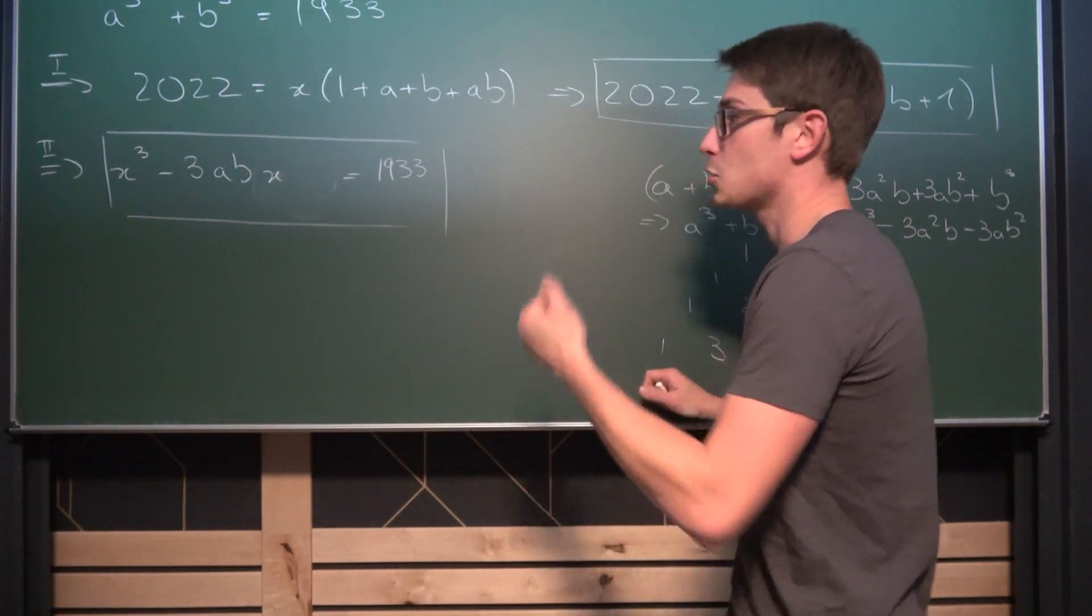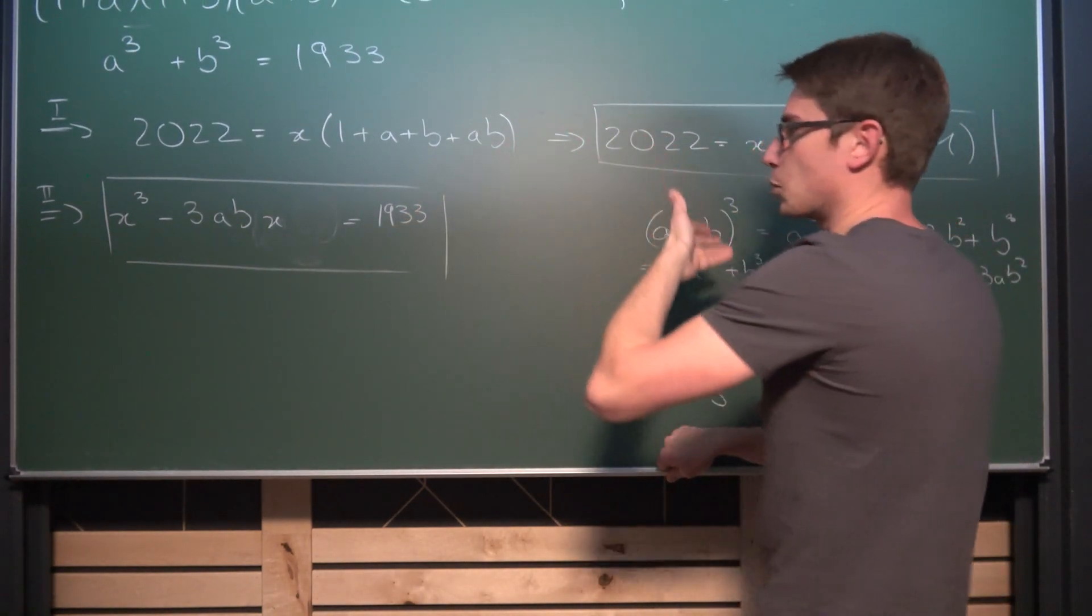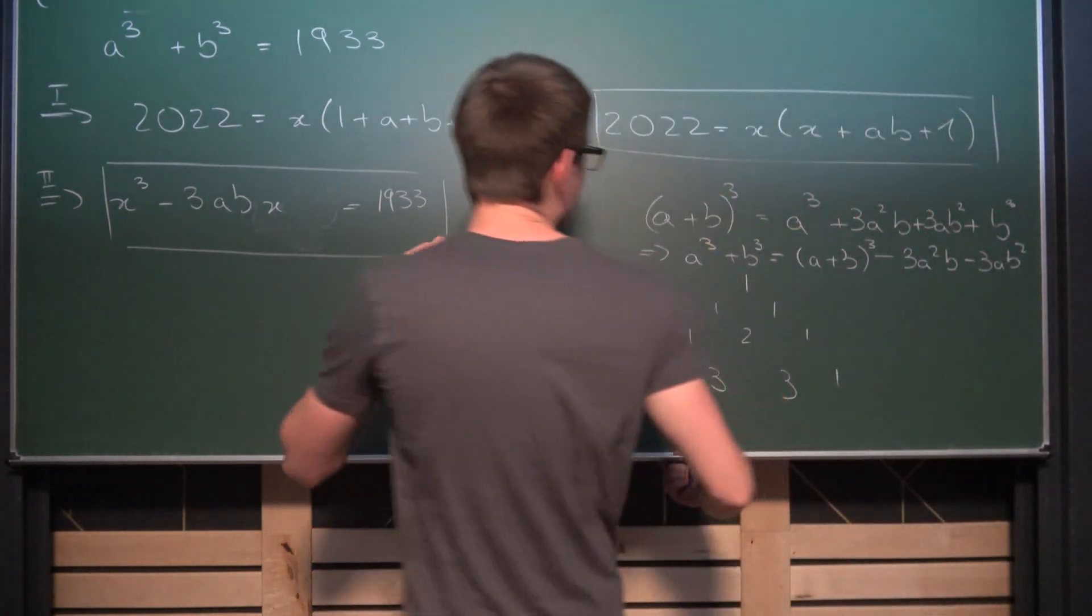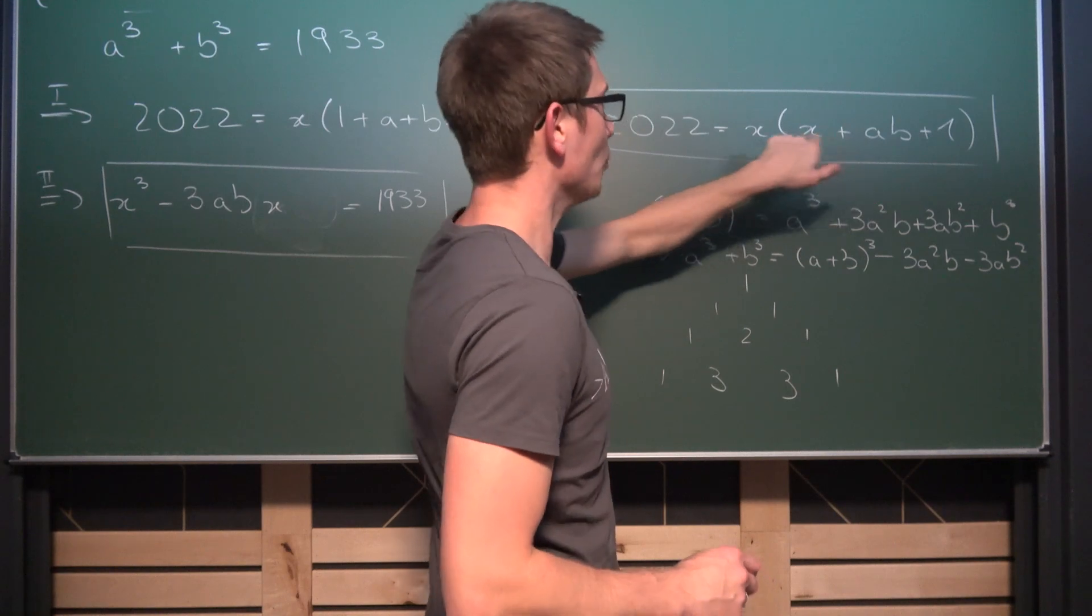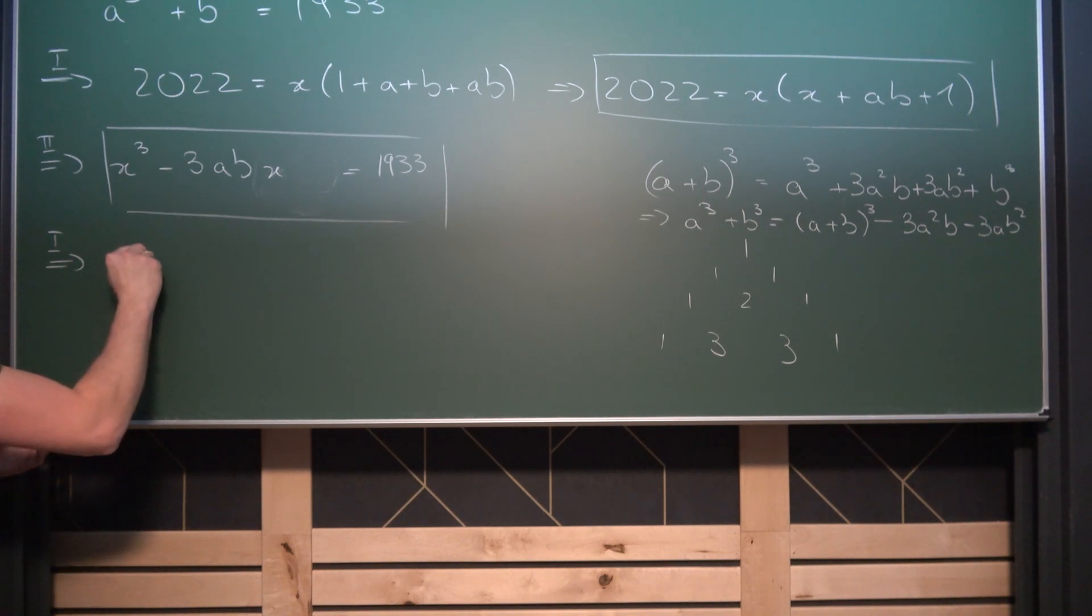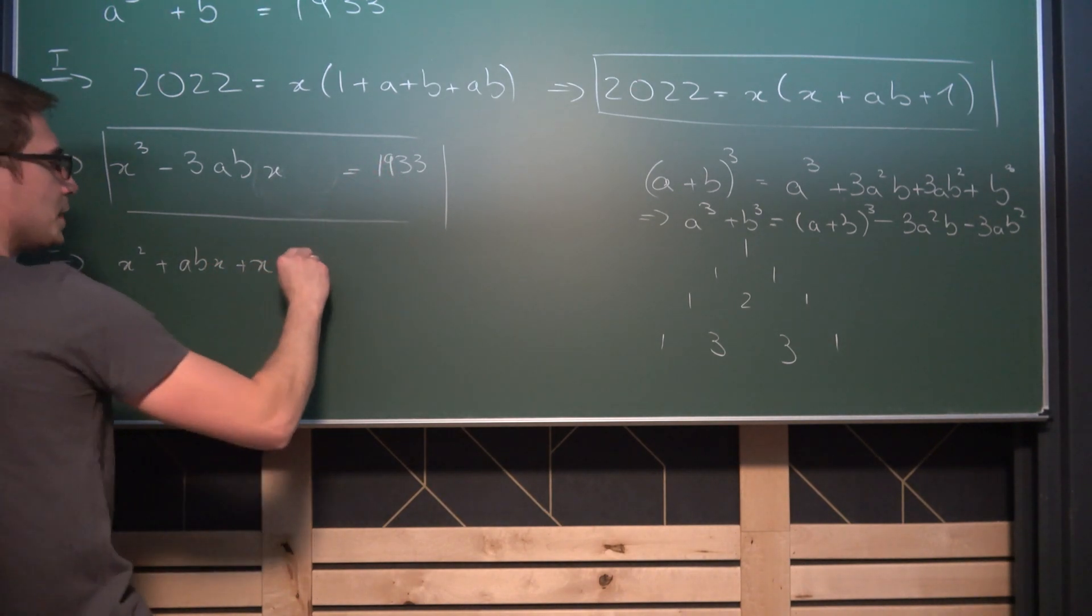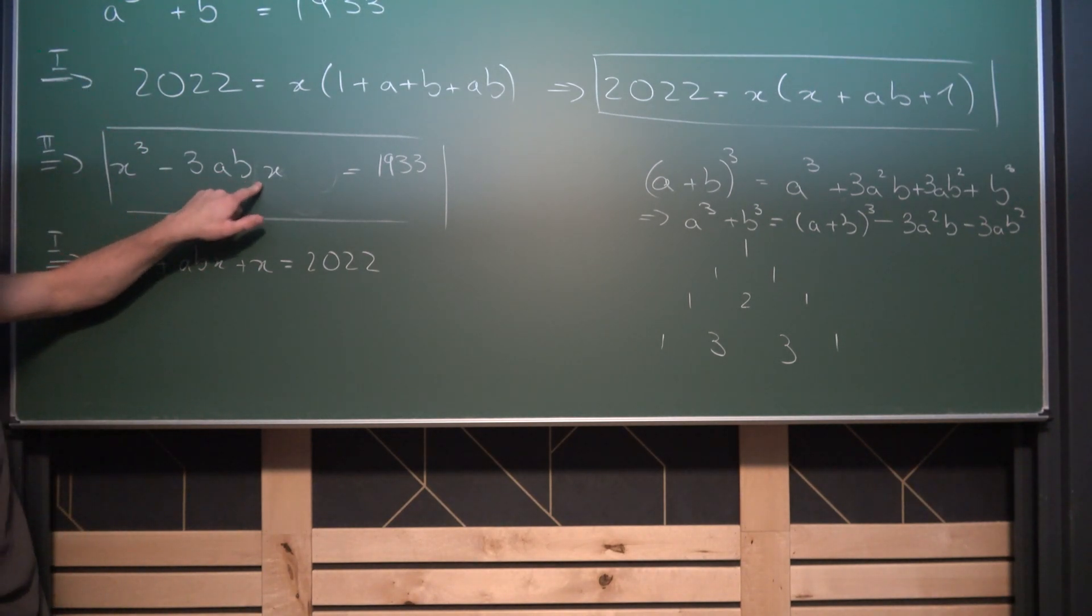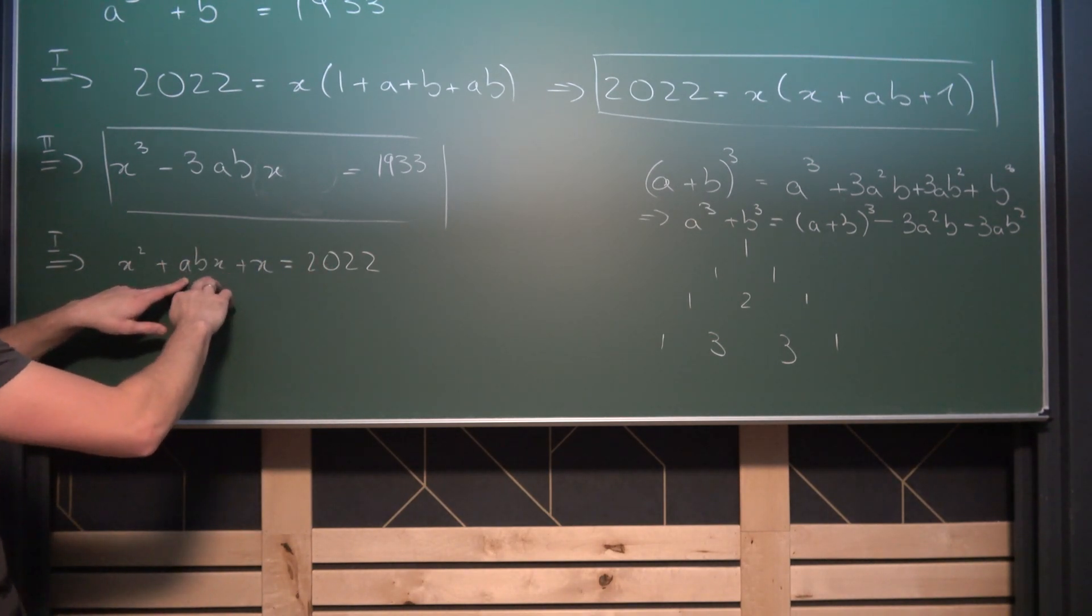Now there are two ways to go about solving something like this. You could either for example subtract both equations from one another Gaussian elimination or what you can also do is you can substitute stuff in. And this is exactly what we are going to do now. I'm going to multiply this part out at first. So what we're also going to get is on the first equation by rewriting we are going to get that x squared plus abx plus x is going to be equal to 2022. And abx is what we find up here in this equation.